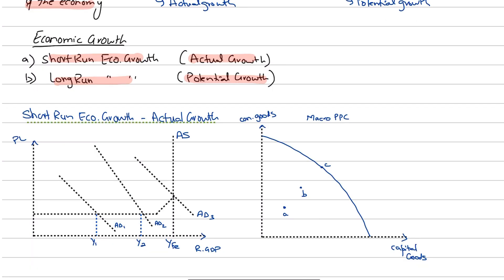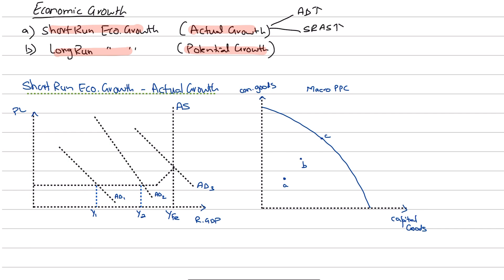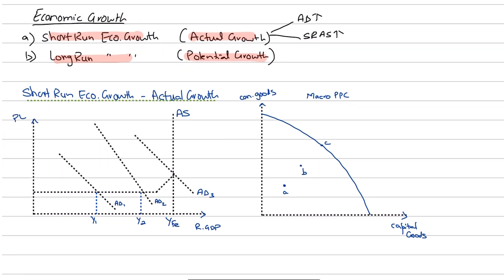When we talk about short-run growth, we need to understand that short-run growth — also known as actual growth — arises because of two factors: an increase in aggregate demand in the economy, or an increase in short-run aggregate supply. Short-run growth is the rise in real GDP, and it always happens within the phase of the business cycle. For example, if our country, Pakistan, is recovering from a recession, then our real GDP is going up — that's what actual growth is, happening because aggregate demand is going up.